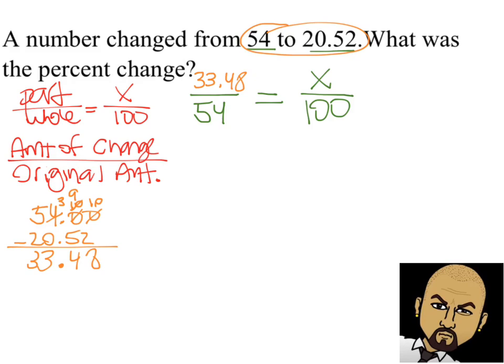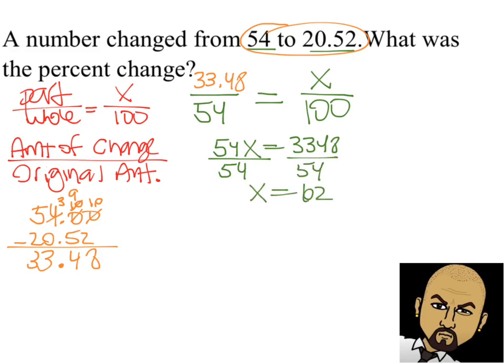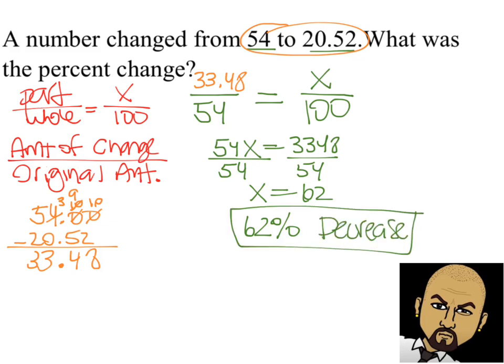Now we have our proportion — our two ratios. We go ahead and cross multiply. To solve for x, we divide both sides by 54, and we end up with x equals 62. Our final answer is 62% because that is the percent it changed going from 54 to 20 and 52 hundredths. But remember, was that an increase or decrease? It decreased. So it's very important that you include increase or decrease. In this case, it's a 62% decrease.